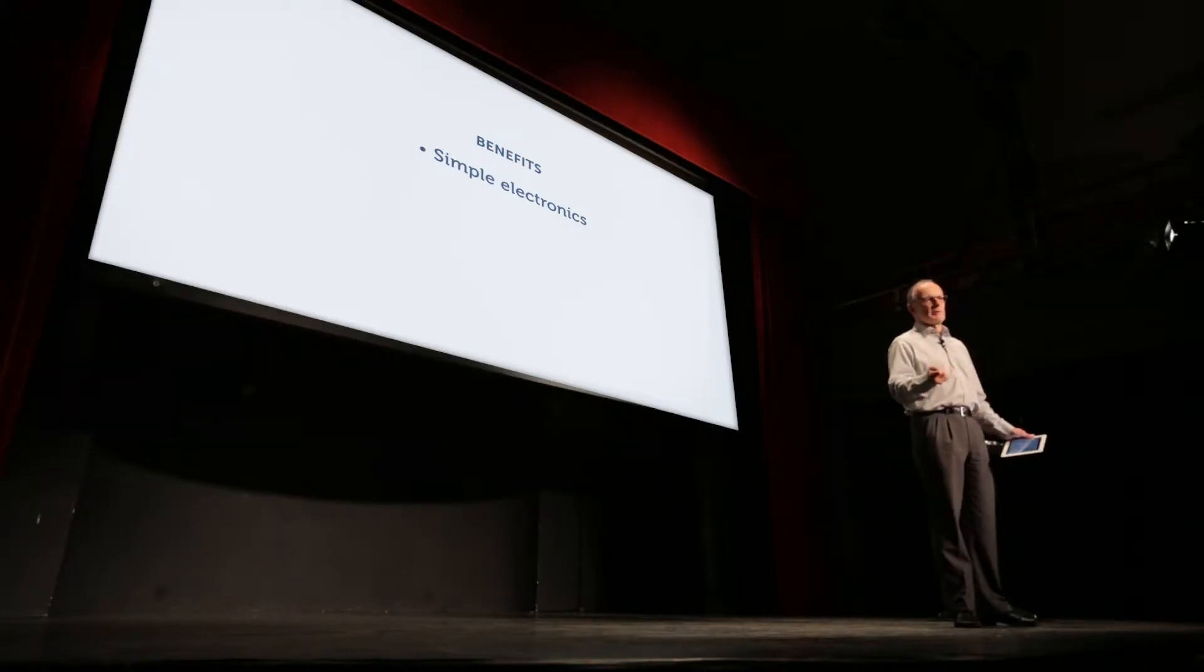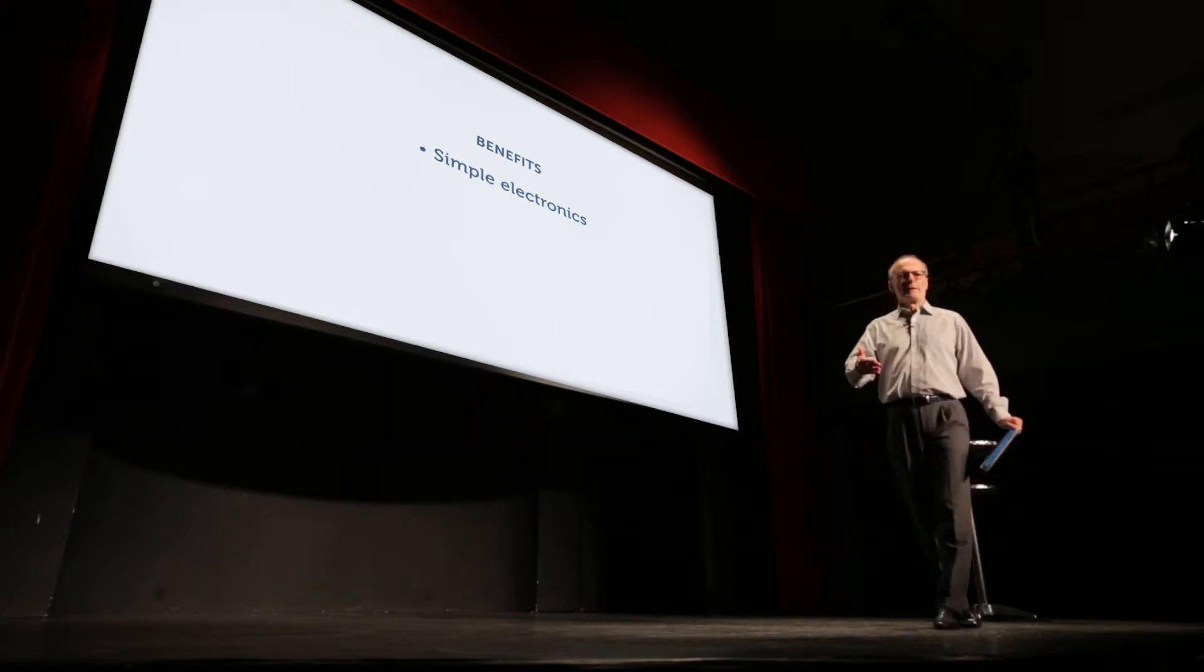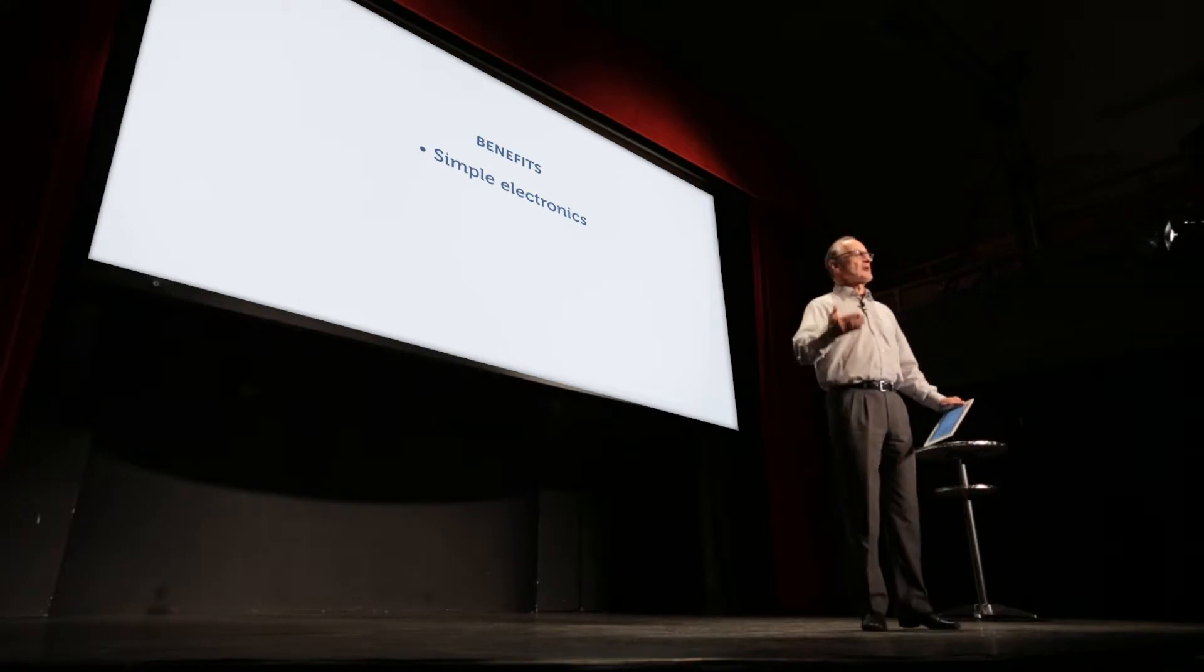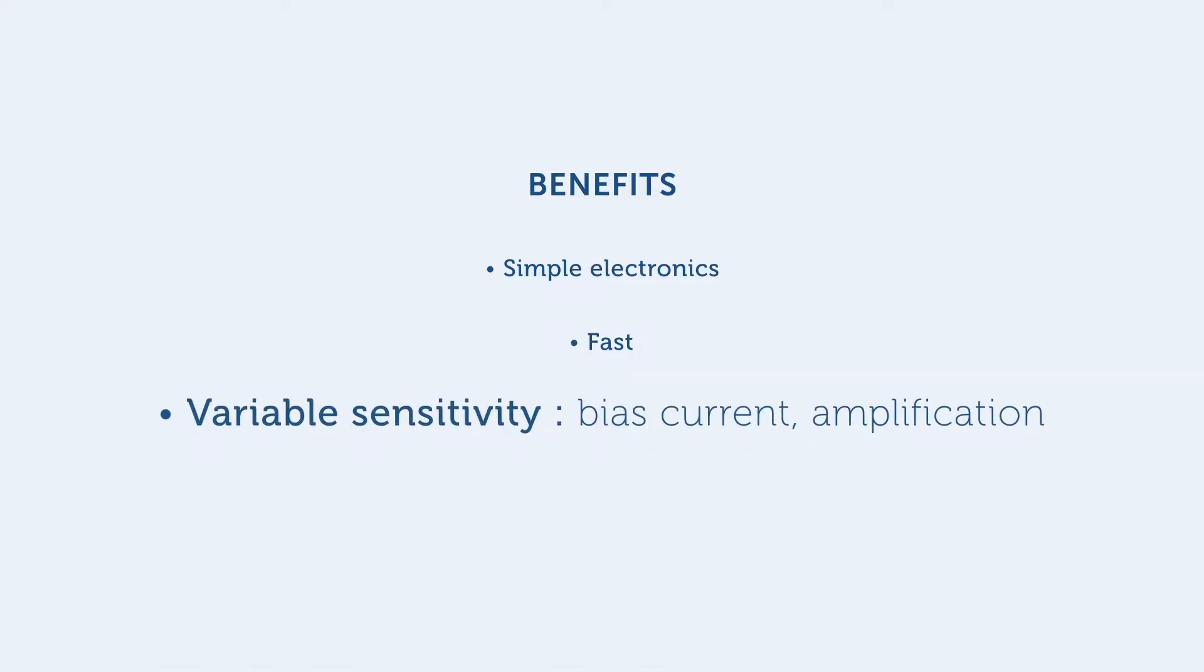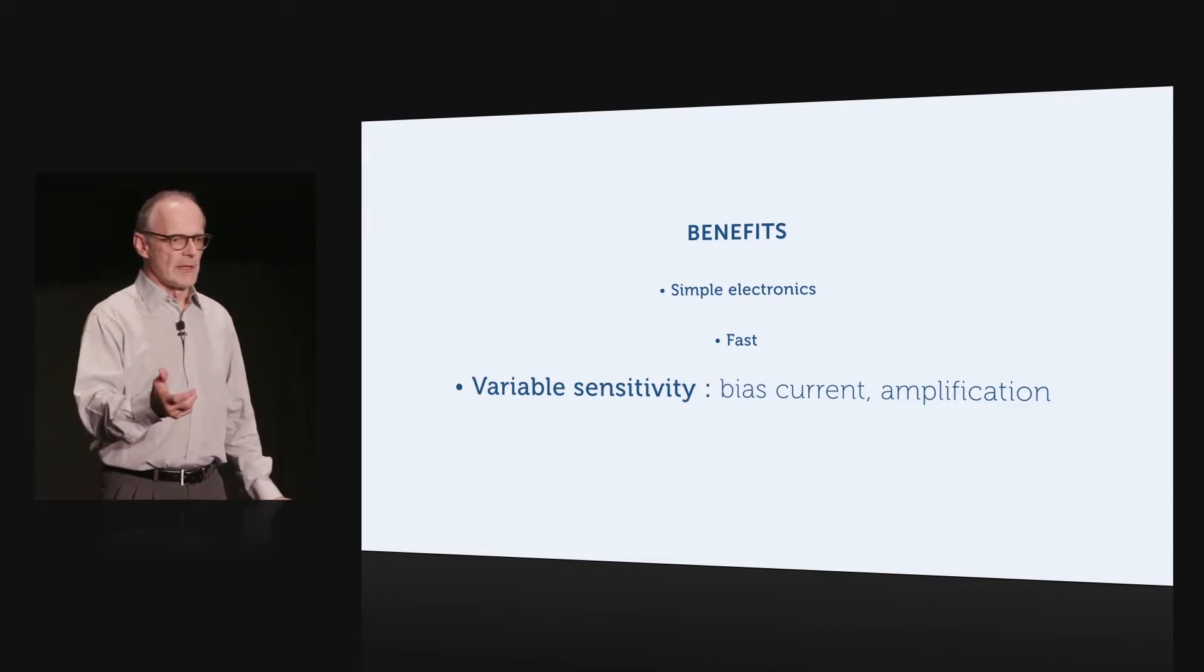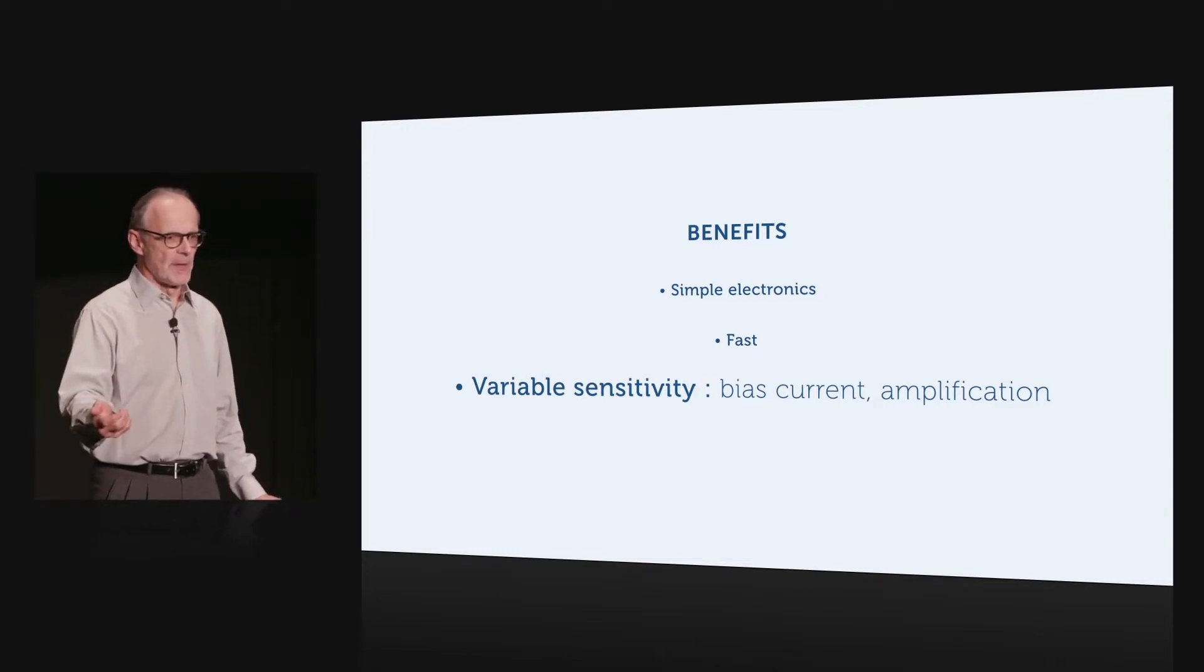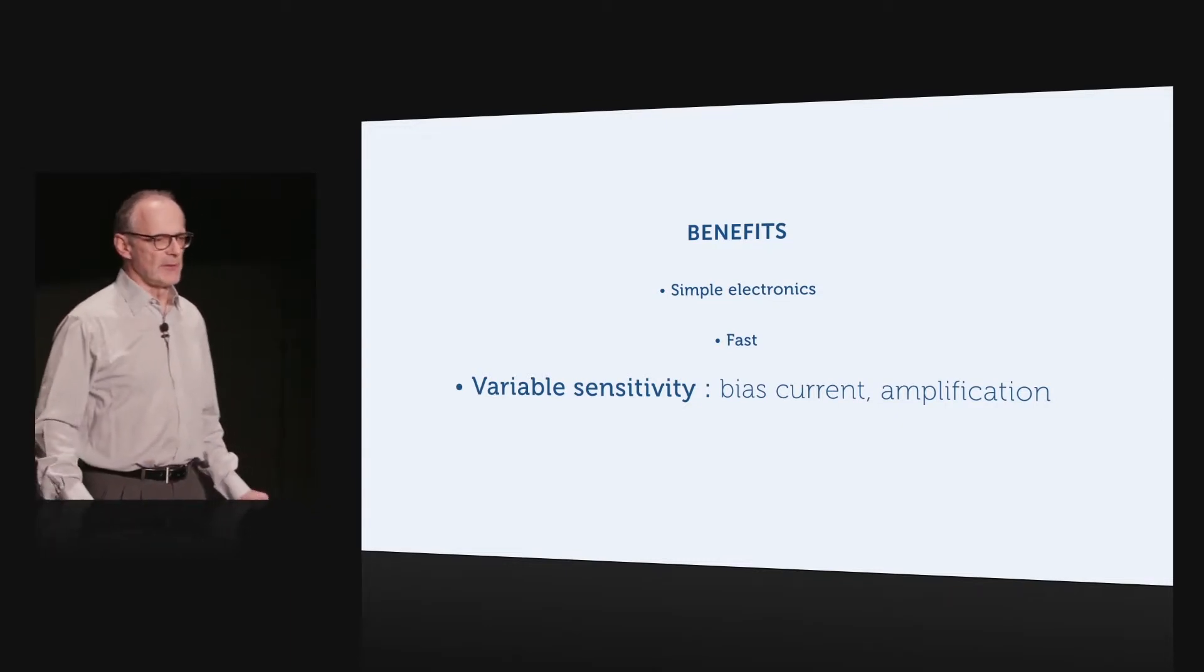The Hall technique has several important benefits. First of all, it's an electronic device, essentially acting as a resistive bridge, and it therefore benefits from the evolution of electronic manufacturing. Secondly, it's quite fast, with bandwidths that go up into the tens of kilohertz quite easily. Third, the sensitivity can be varied, either by varying the bias current or by changing the amplification of the voltage signal. Therefore, we can cover with a single sensor a large range of magnetic fields.